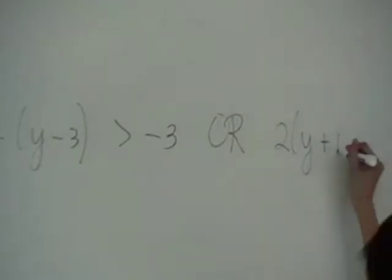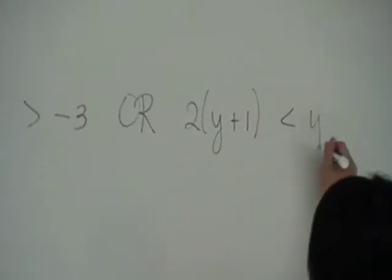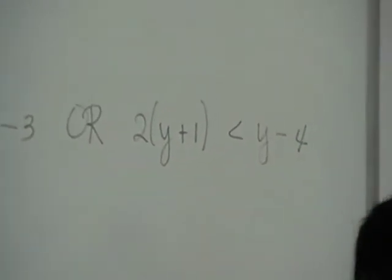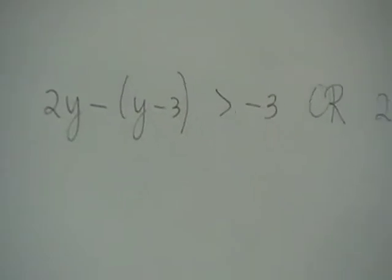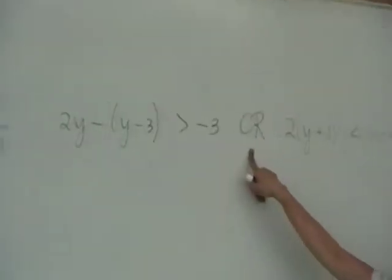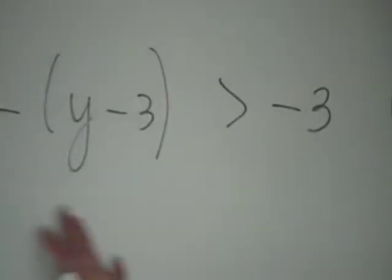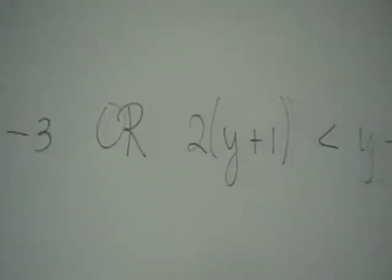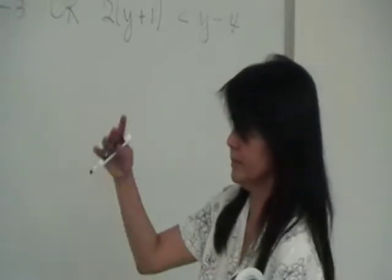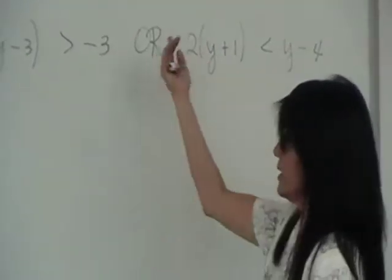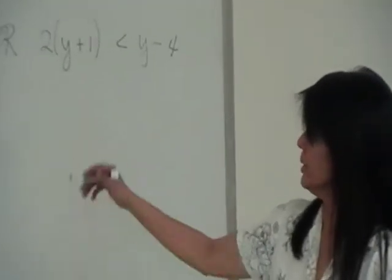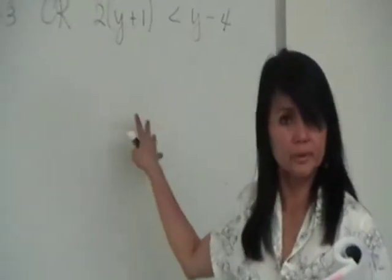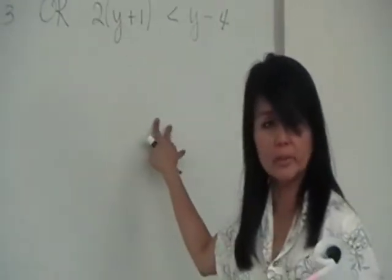The next problem is a compound inequality with the word 'or' as the connective. It's still linear because it's a polynomial of degree 1. You could later have compound quadratic inequalities, but for now these are linear. Since it has the word 'or,' there are really two separate inequalities you can work on.